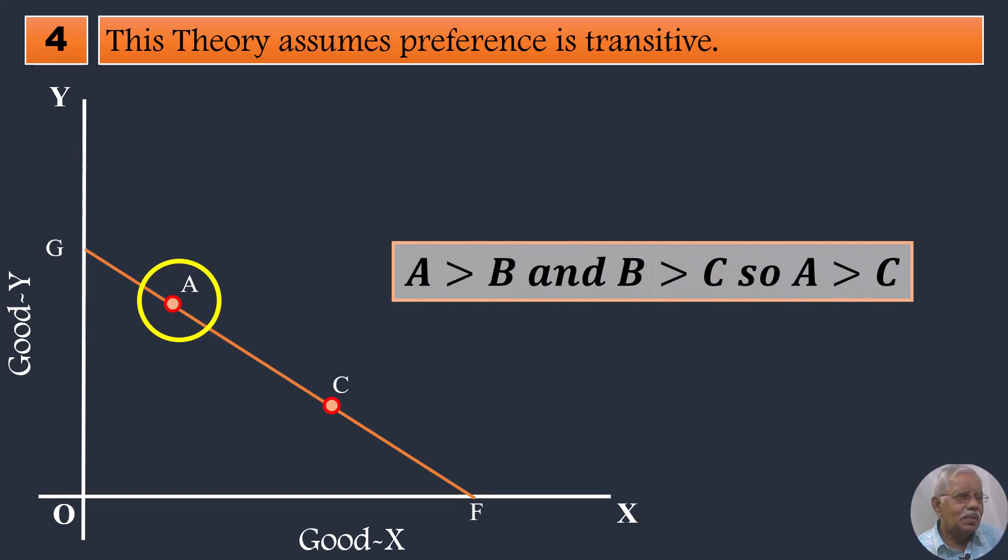In simple terms, it can be symbolically represented as A is greater than B and B is greater than C and so A is greater than C.